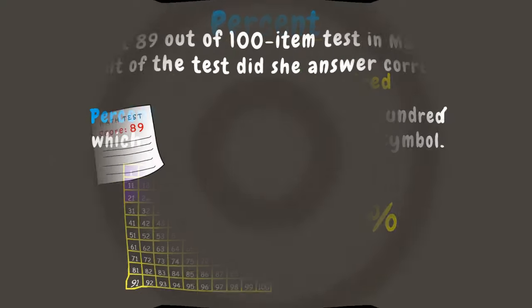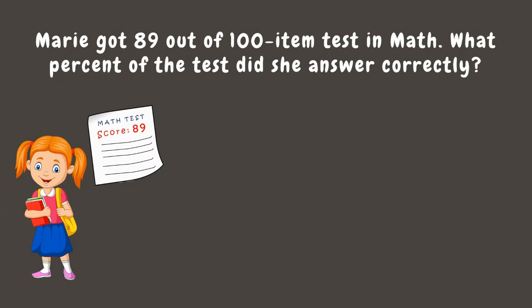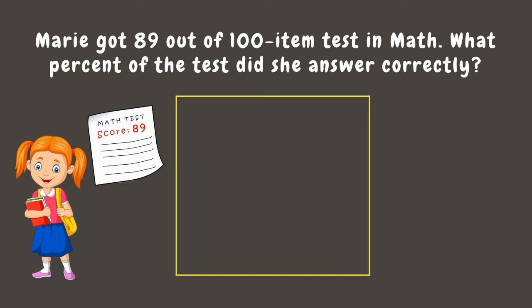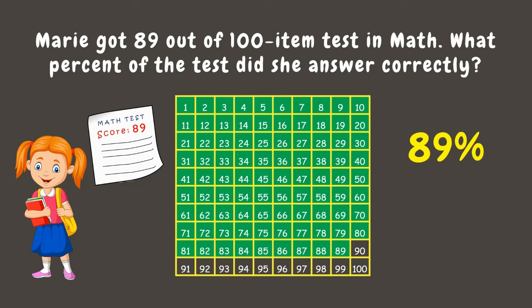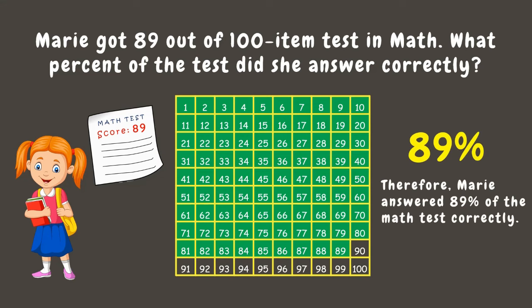Now let's go back to our problem and solve it by drawing a model. Since the test has 100 items, let's divide this figure into 100 parts. Out of 100 items, Marie got 89 correct answers, so let's shade 89 parts to represent the number of items she got correctly. Since 89 parts out of 100 parts are shaded, this means Marie answered 89 percent of the math test correctly.